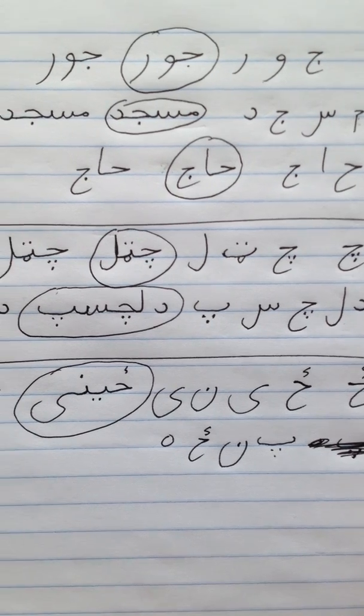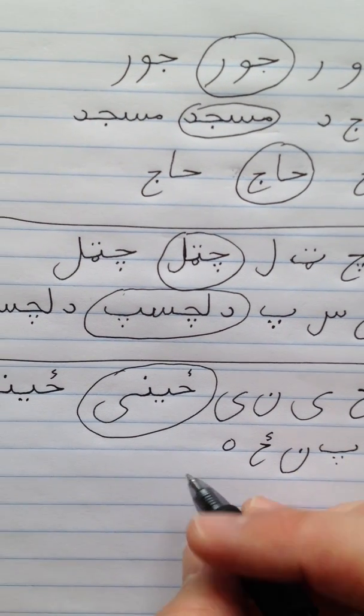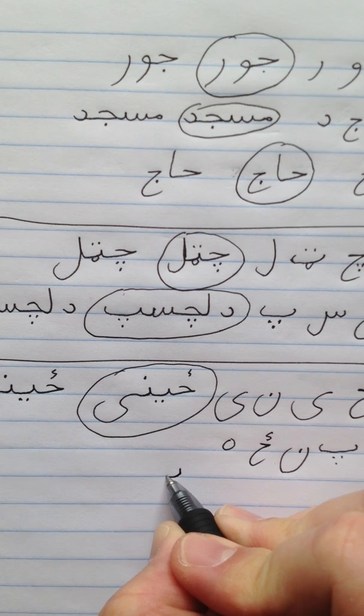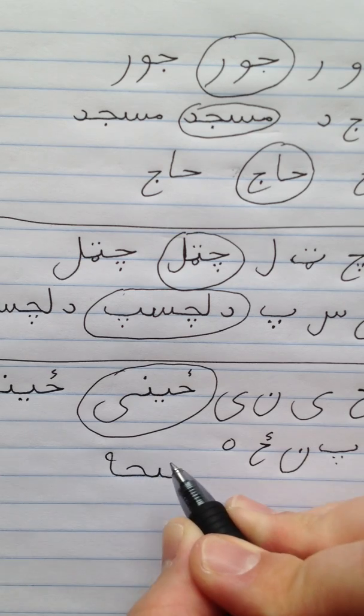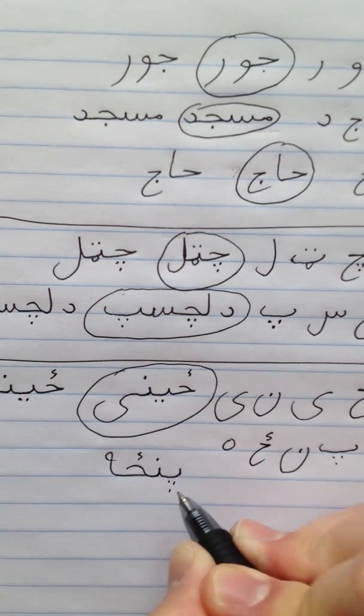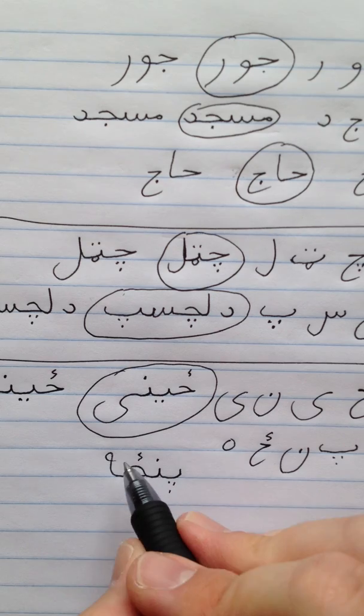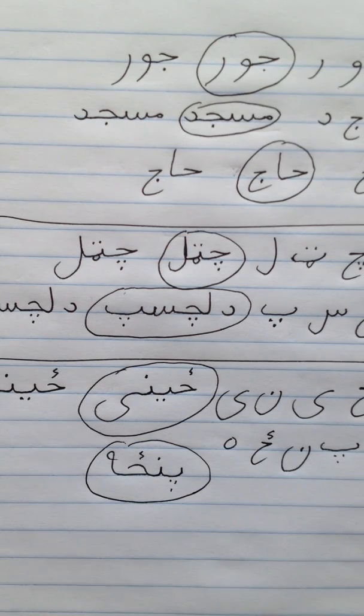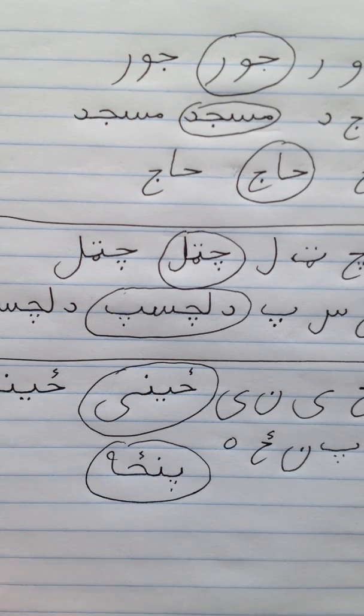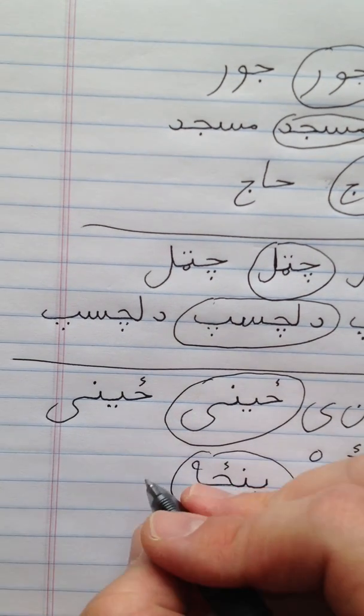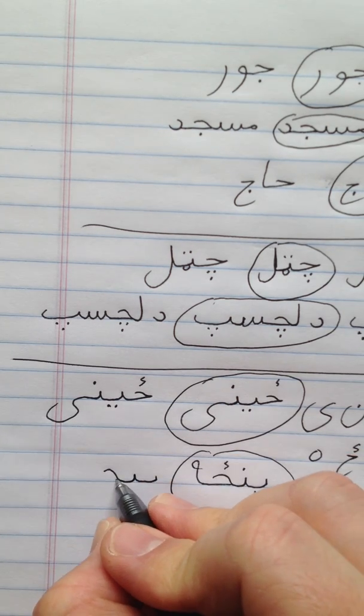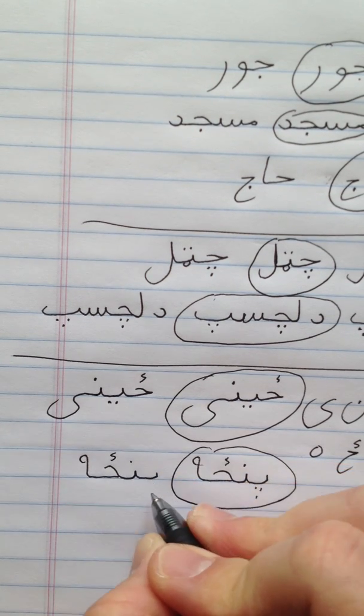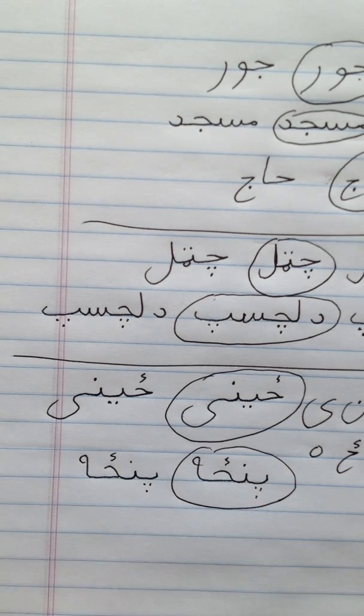Now when you connect these letters, I'm going to drop down a little bit here. PE, NUN, ZE, YA. PINZE. This means five. Let's do that one one more time. PE, NUN, ZE, YA. PINZE.